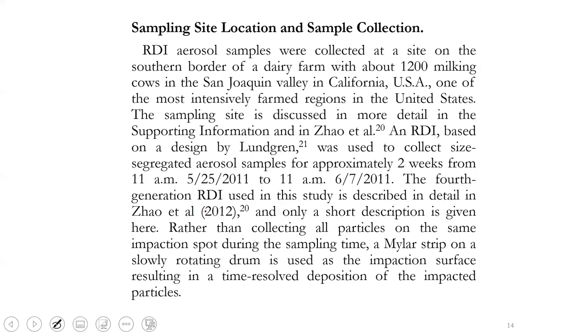This is the first paragraph for the sampling site location. So this is for the sampling site and sample collection. It started with a location because this research involved off-site measurements outside of laboratories. So it gives you the location at the southern border of a dairy farm with about 1,200 milking cows in California. So it's very clear. Why does this 1,200 milking cows matter? Keep this number in mind, you will see how it was used.